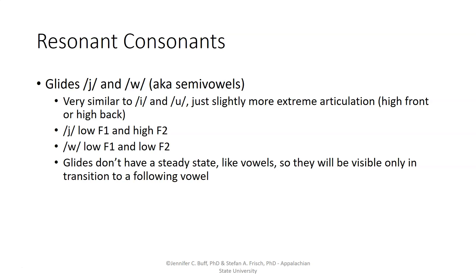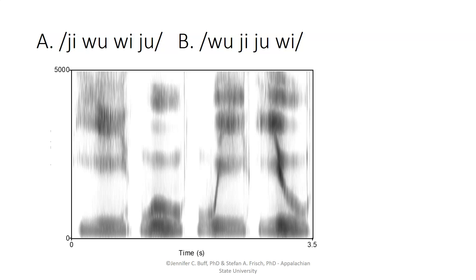The glides don't have a steady state in them like vowels, though, so they will be visible only in transition to a following vowel. Here, for example, we have a spectrogram of four syllables with Y and W onsets followed by E and U vowels. The question is: do we have the sequence Y, W, U, W, or the sequence W, Y, U, W?